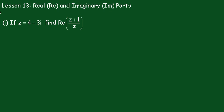Z plus 1 over Z will be equal to 4 plus 3i plus 1 over 4 plus 3i, which becomes 5 plus 3i over 4 plus 3i.